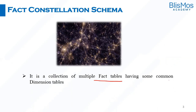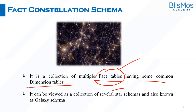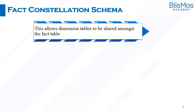Fact constellation schema is a collection of multiple fact tables having common dimension tables. Pay attention here — I am not talking about multiple dimension tables, I am talking about multiple fact tables. In snowflake schema and star schema, there was one fact table, but in fact constellation schema we are talking about multiple fact tables. Some people also call this a galaxy schema.